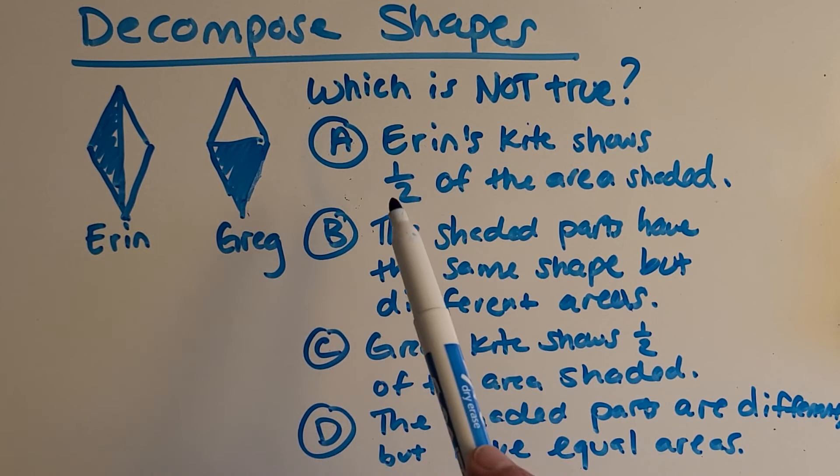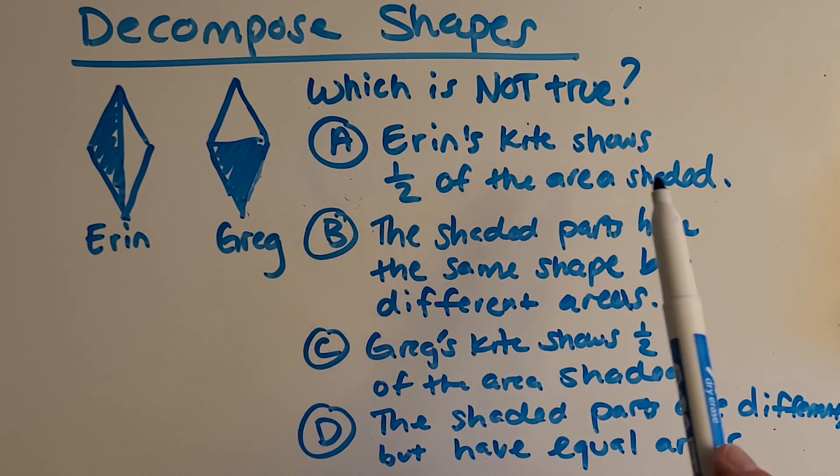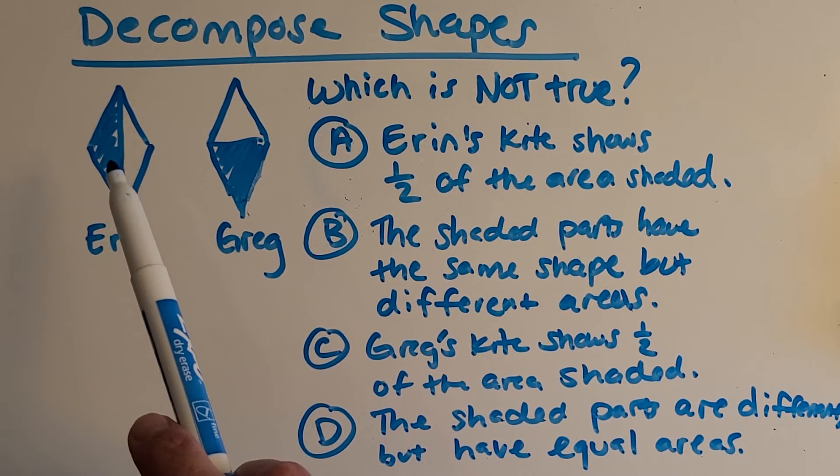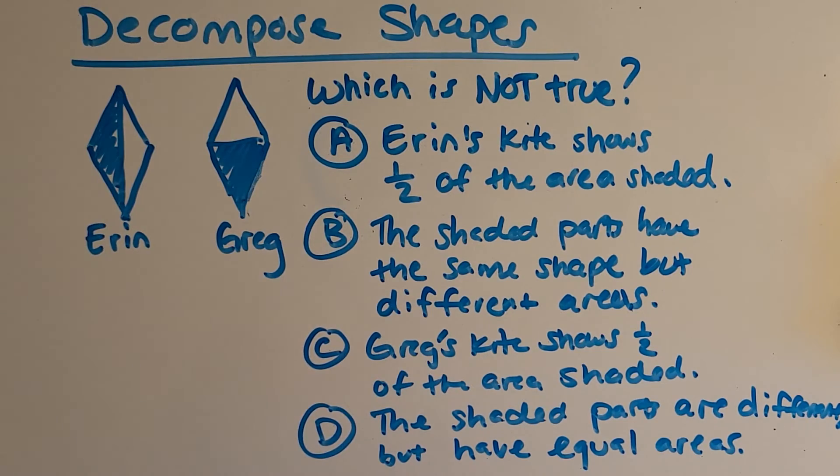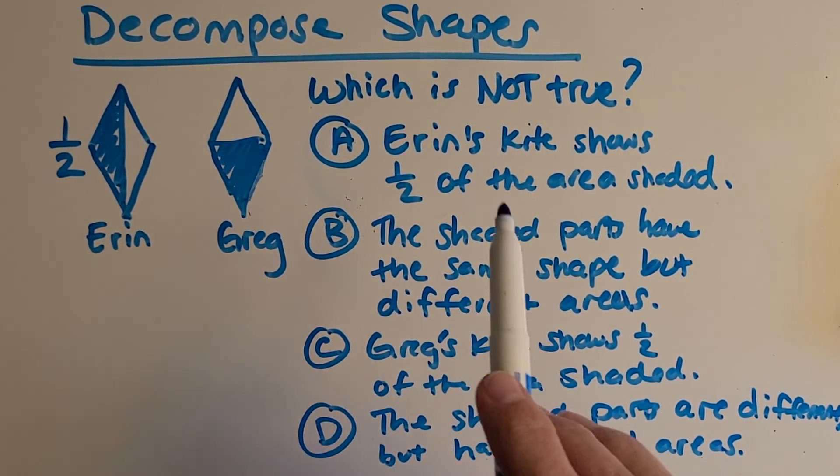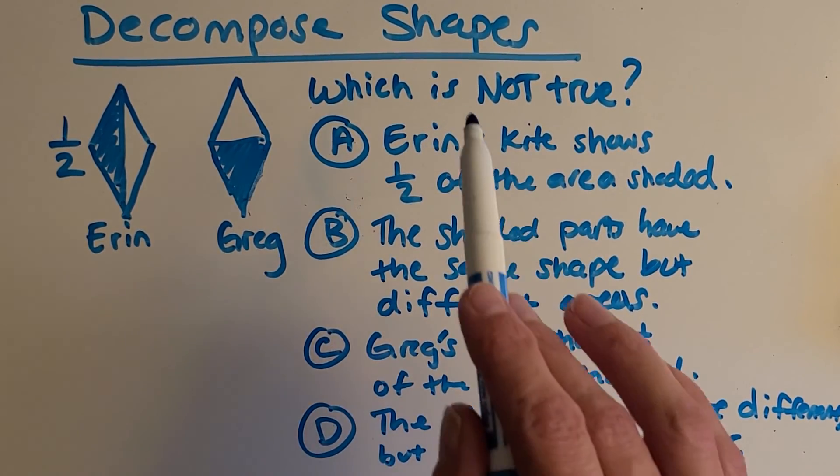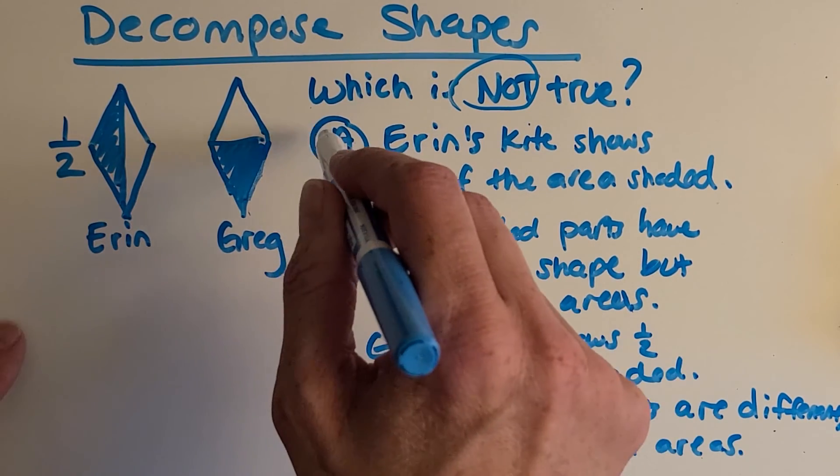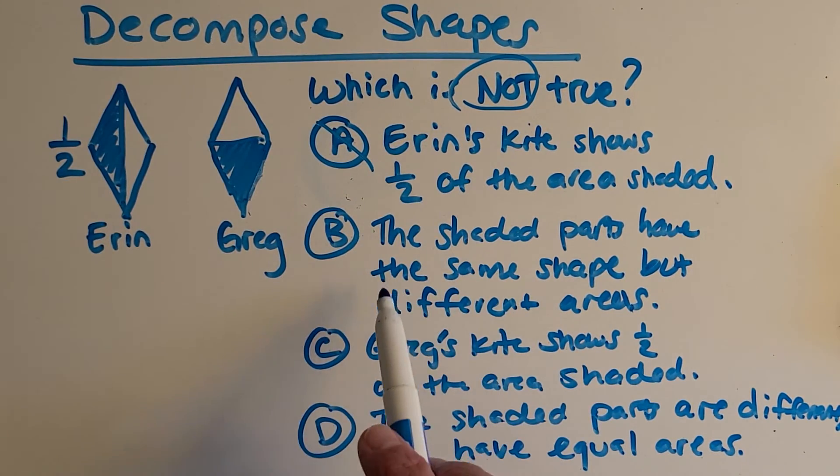So let's read through these. A says, Aaron's kite shows one half of the area shaded. What do we think about that one? Look at my kite. Is that representing one half? Yes it is. But we want to keep going because we're looking for something that is not true. So that is true.